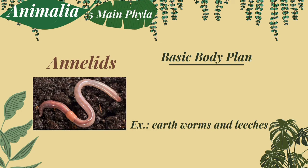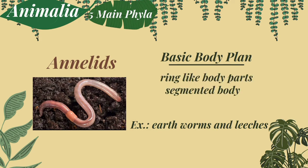Next, the annelids. They have ring-like body parts with a segmented body. The front end is the mouth and the other end is the anus. Also, annelids can thrive or live both on land and in water. Examples of these are earthworms and leeches.